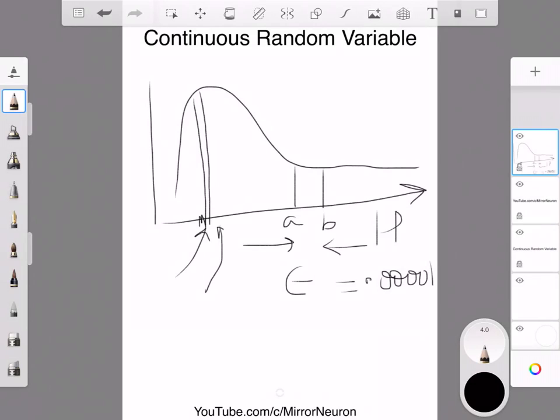So that means by considering a small range, I'm actually kind of looking at the particular value. So far I've been saying that I'm looking only at the range and not looking at the particular value, but by considering a small range like this, I can approximate that I'm actually looking at a particular value.